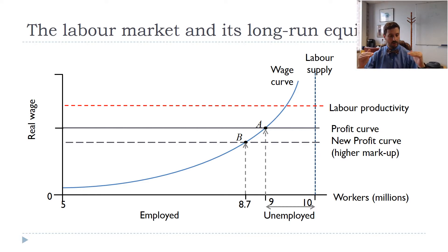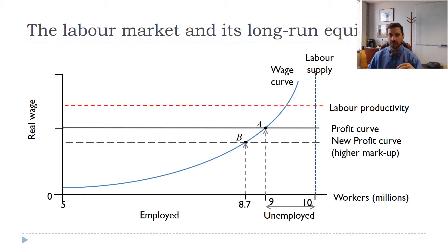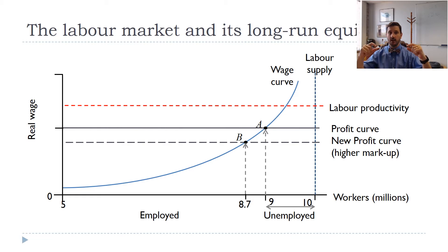Your real wage can fall if either your nominal wage falls and prices stay the same, or if your nominal wage stays the same but prices go up. With a higher markup, firms are able to increase their prices, so the prices of goods workers are buying go up, which means their real wage falls — it doesn't necessarily mean the nominal wage falls. If we get a change in the profit curve, we'd expect a fall in the real wage and an increase in unemployment. Conversely, if we can increase competition, the profit curve would move up toward labor productivity, the real wage would go up, and we'd have fewer people unemployed.